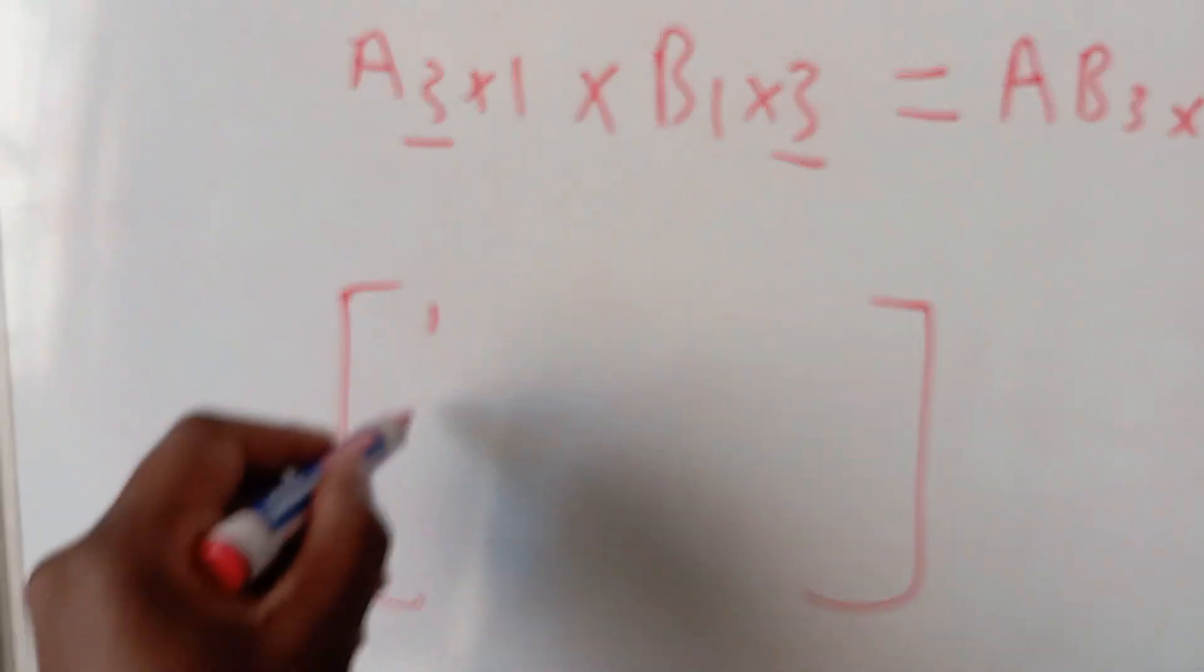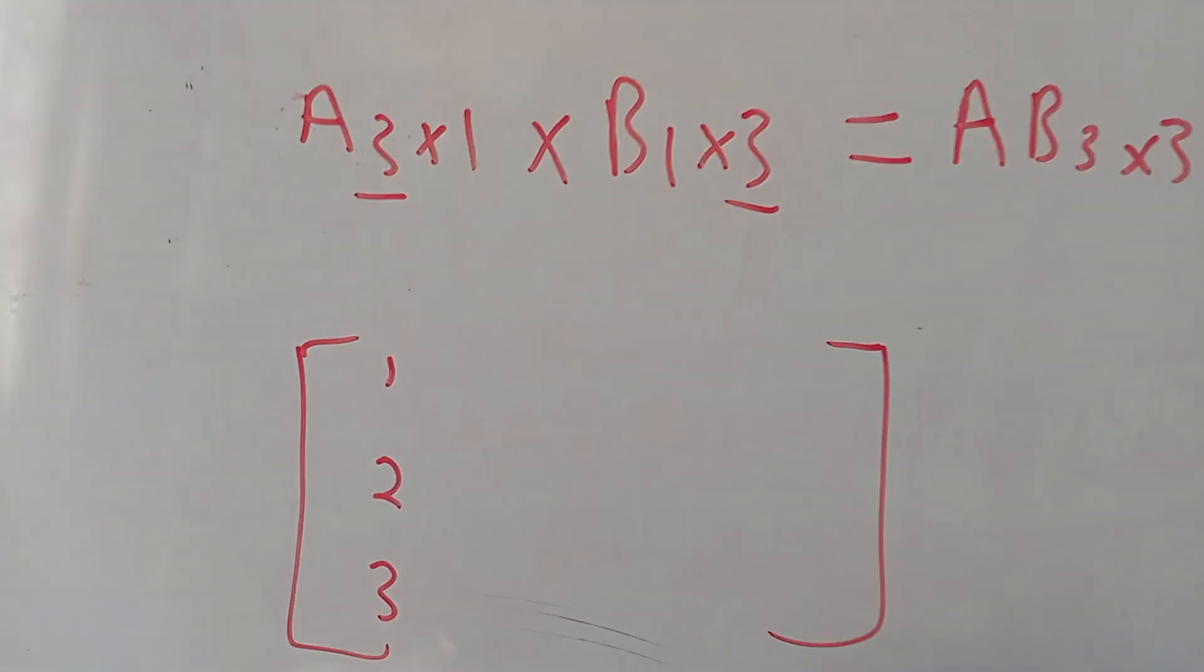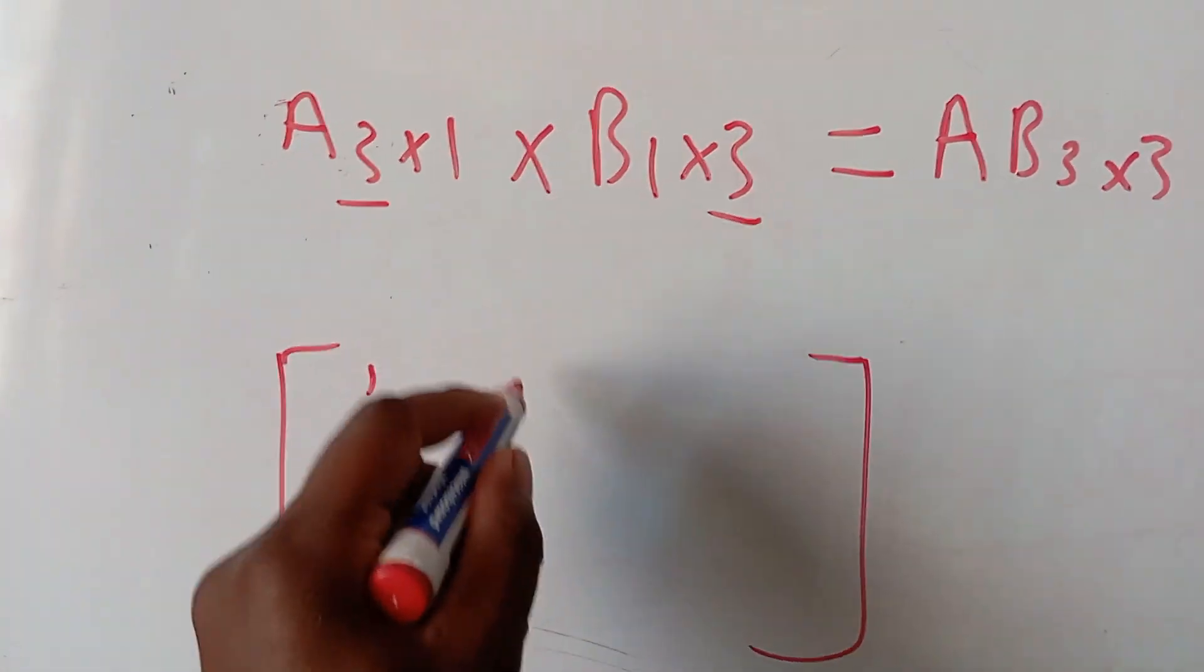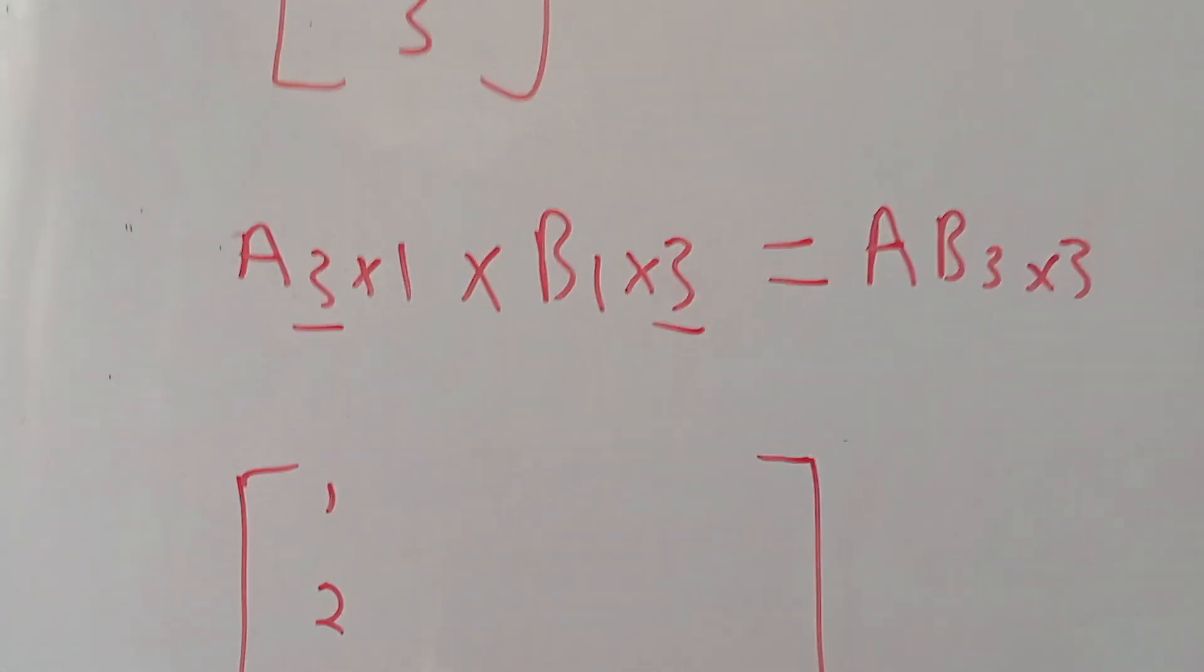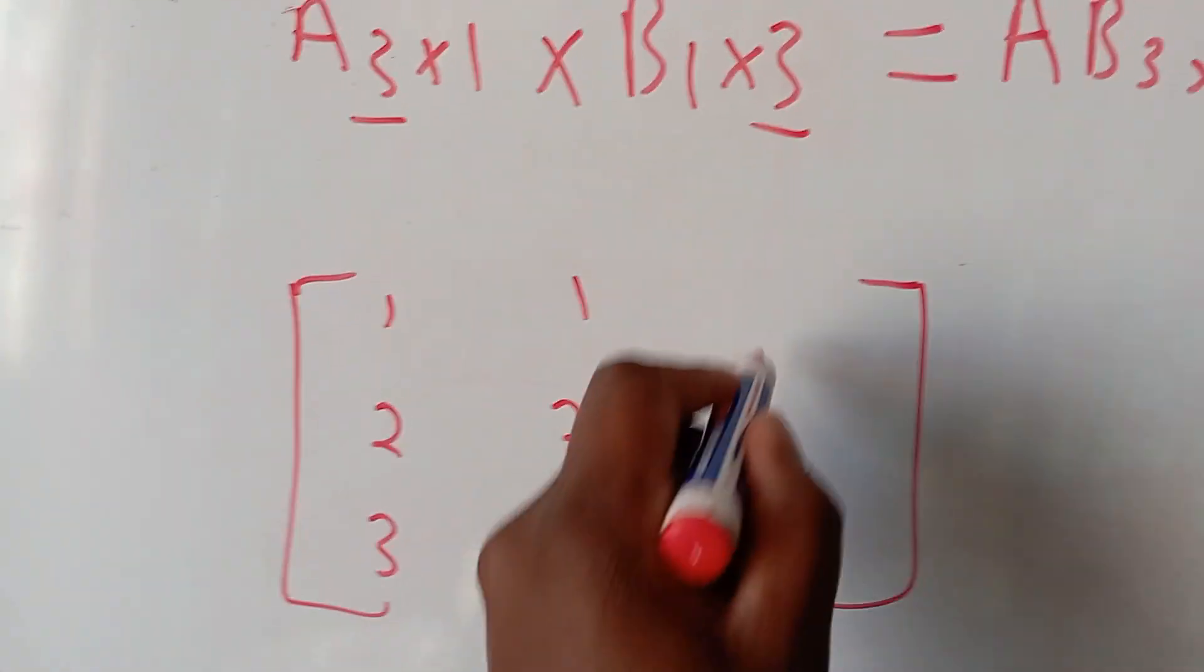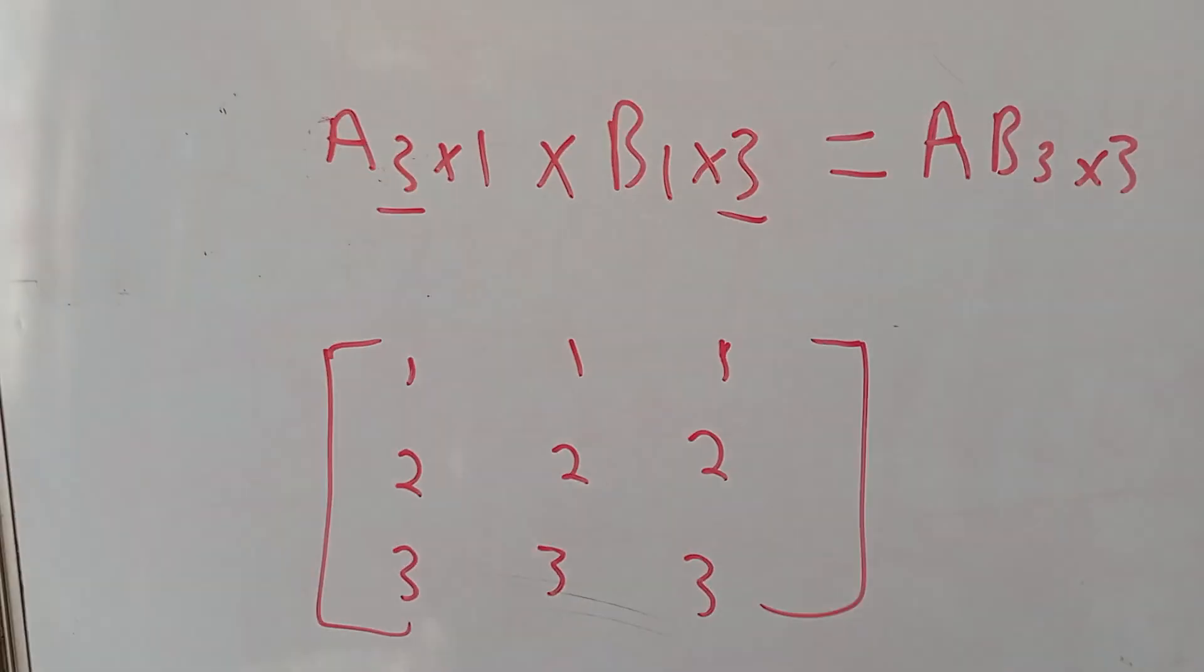We're going to have 1, 2, 3 because we're having 1, 2, 3 here. And then we're going to have again 1, 2, 3, then 1, 2, 3.